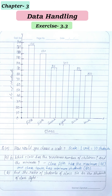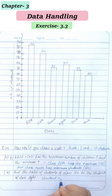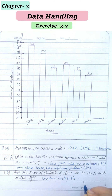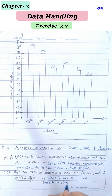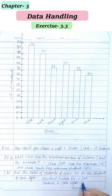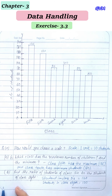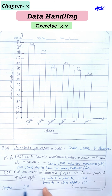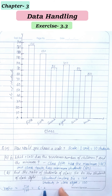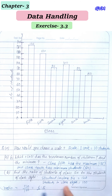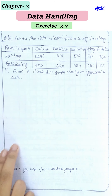The second part of (b) asks to find the ratio of students in Class 6 to students in Class 8. Class 6 has 120 students and Class 8 has 100 students. The ratio is 120 upon 100, which simplifies to 6:5.